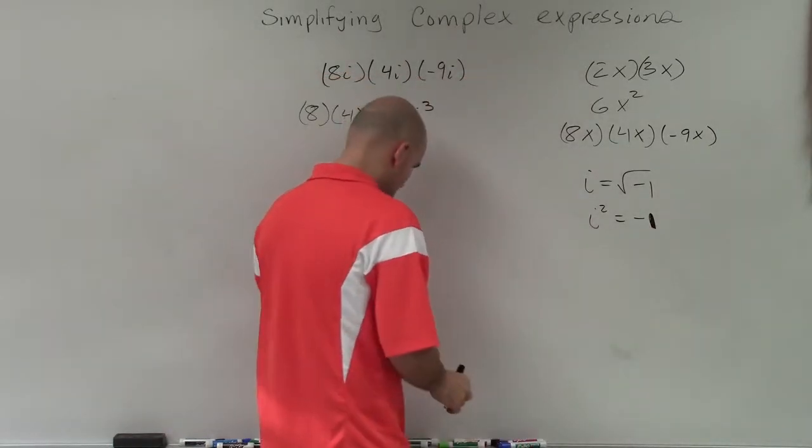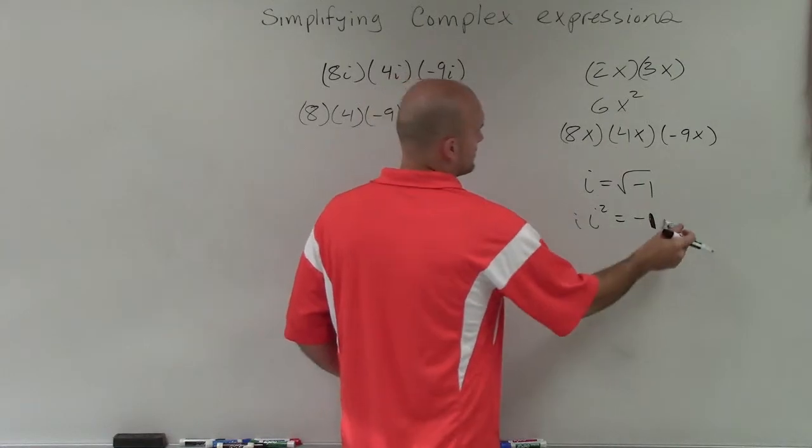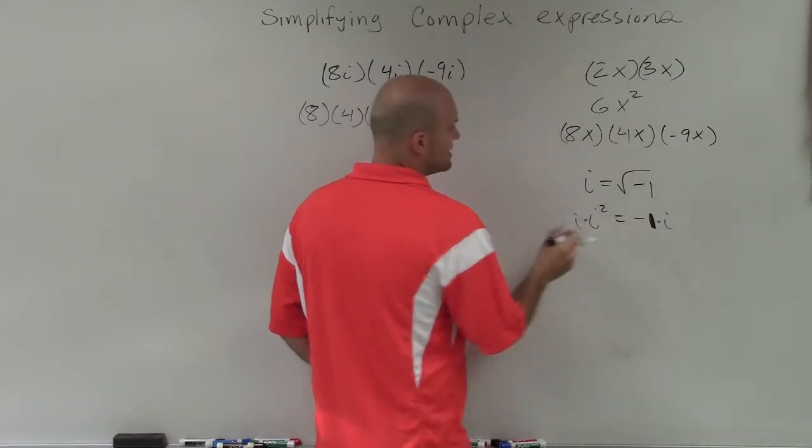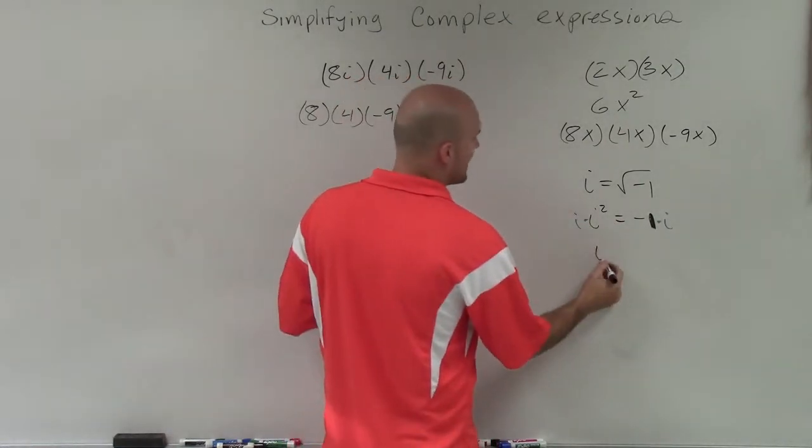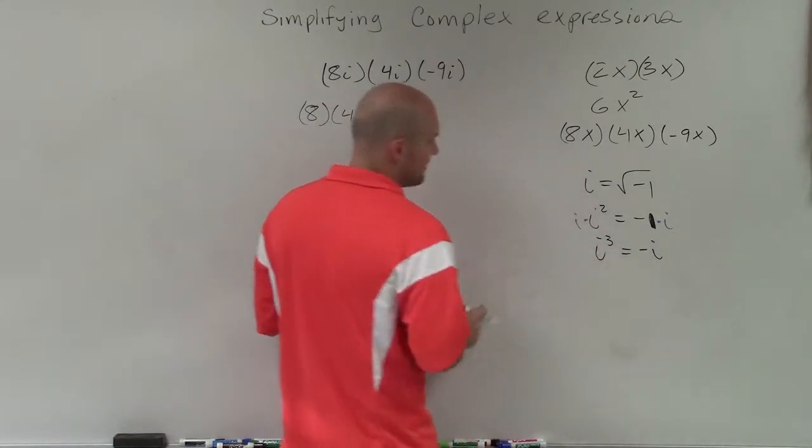If I multiply i on both sides one more time, since this is an equation, I have to multiply both sides, I'll have i cubed, and that's going to equal a negative i.